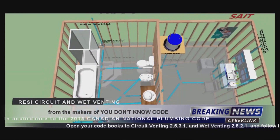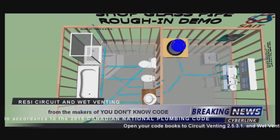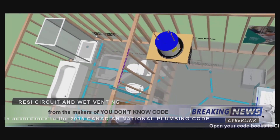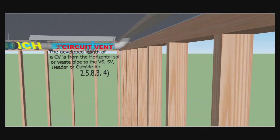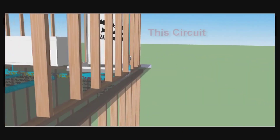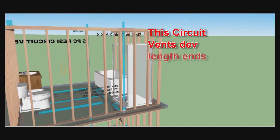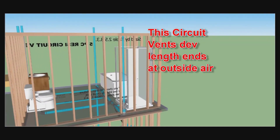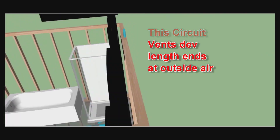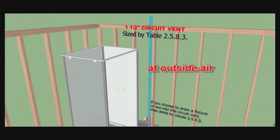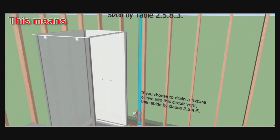We'll start off with the circuit vent, or the drive portion of the circuit vent. In order to size it, we need to know its developed length, which begins at the horizontal soil or waste pipe connection. In this particular case, the circuit vent's developed length ends at outside air. It works out to be 1.5 inches according to table 2583, counting the fixture and its developed length.